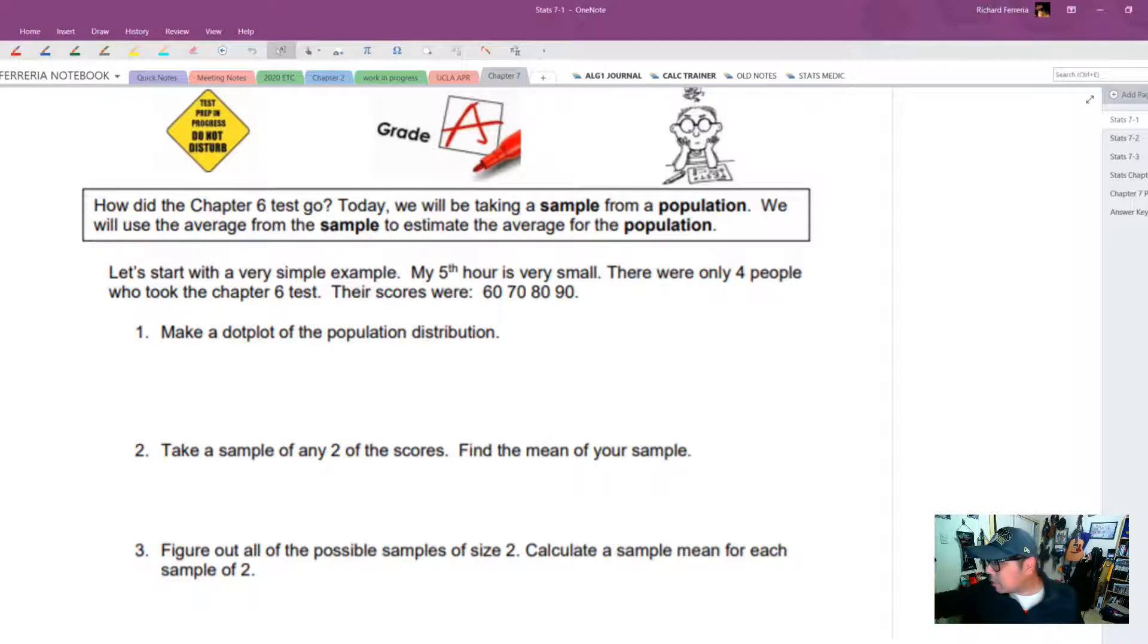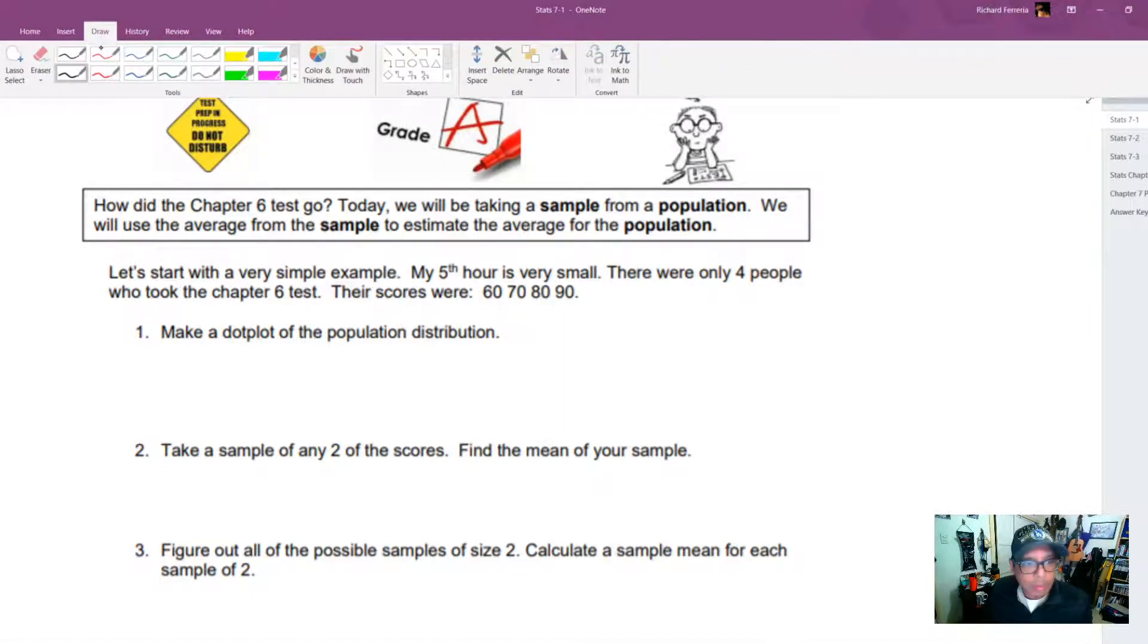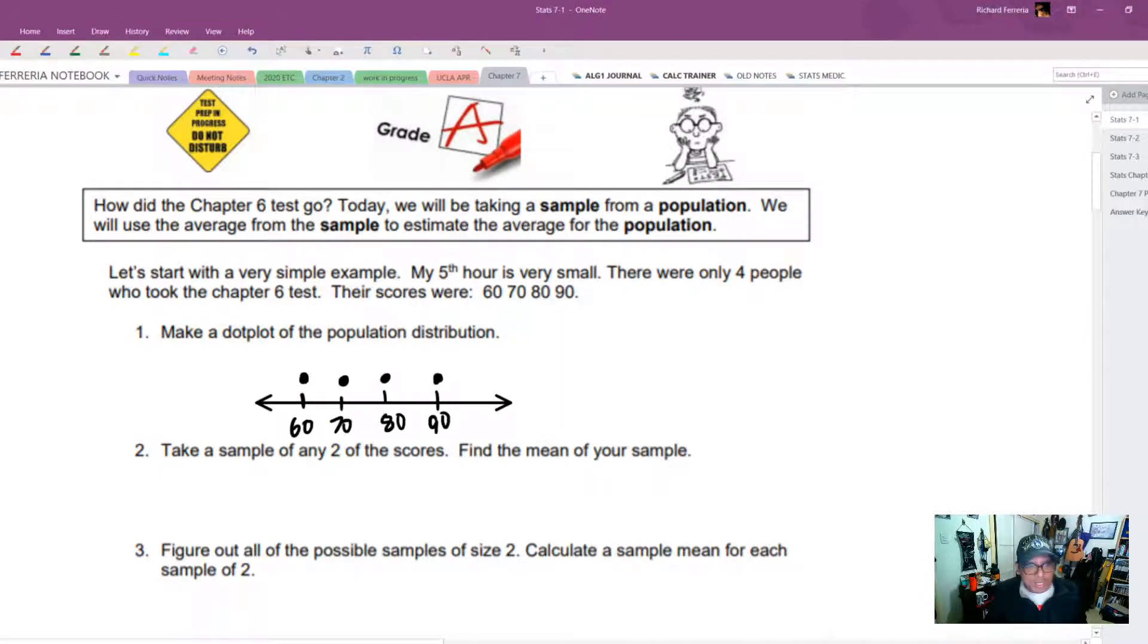There are only four people in it. Believe it or not, I have had a class with only four people in it before. I don't know why they let me keep it, but I did have one a long time ago. So first of all, this is the entire population. So let's draw a dot plot of the entire population.